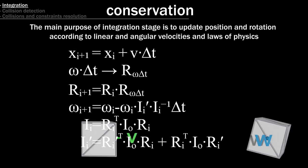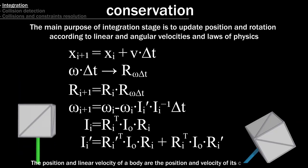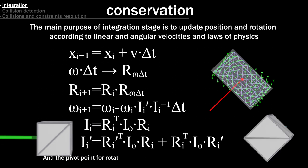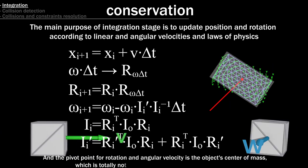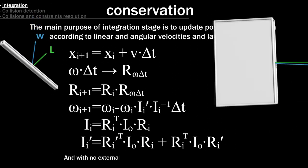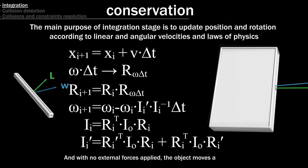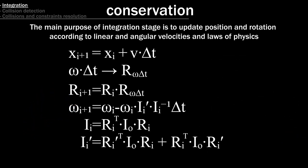Let's summarize, the position and linear velocity of a body are the position and velocity of its center of mass. And the pivot point for rotation in angular velocity is the object's center of mass, which is totally not the same point as the object's centroid. And with no external forces applied, the object moves according to the laws of conservation of linear and angular momentum. Now we know how to make the object move properly enough.